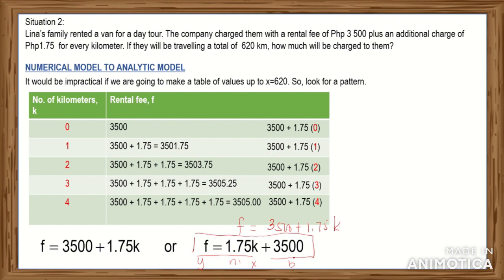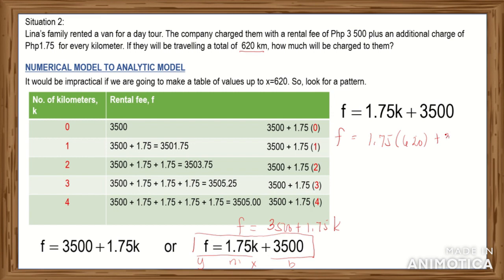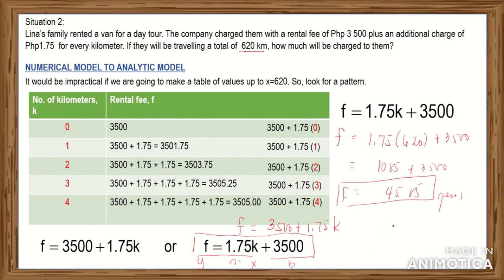Now, we use this equation to find the charge for 620 additional kilometers. Substituting K = 620: F = 1.75 × 620 + 3,500. Since 1.75 × 620 = 1,085, adding 3,500 gives us 4,585. This means Lina's family will be charged 4,585 pesos when they travel a total of 620 kilometers.